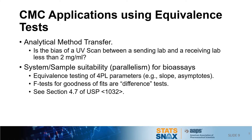There are several applications of equivalence tests in the industry. The first is an analytical method transfer, where an analytical method is sent from one lab to another and we need to determine whether the bias is sufficiently small between the two labs. For example: is the bias of a UV scan between a sending lab and a receiving lab less than two units? This would be set up as an equivalence test where the alternative hypothesis is that the absolute value of the bias is less than two.